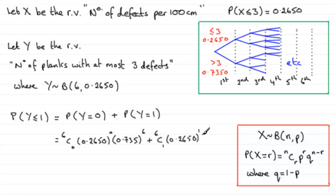And you've got probability of failure 0.735, and that is to the power n minus r here, n minus 1, 6 minus 1, which is the power 5.